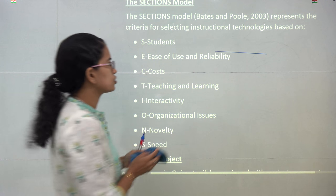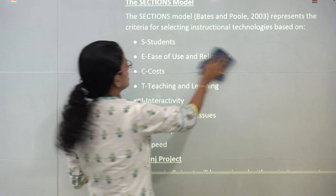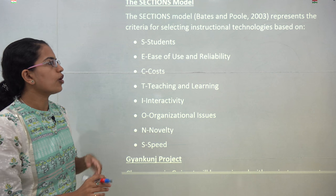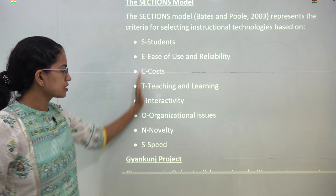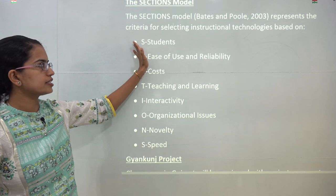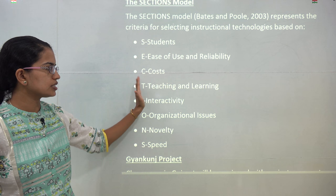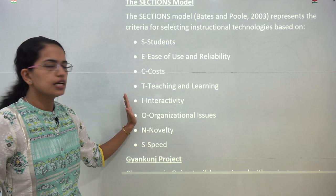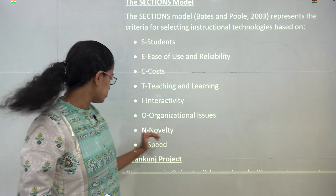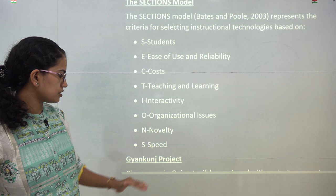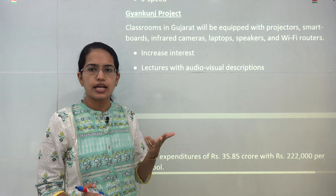The SECTIONS model was given by Bates and Pool in 2003 and represents the idea of selecting which instructional technology should be used. SECTIONS stands for: S — Students, E — Ease of use, C — Cost, T — Teaching, I — Level of Interaction, O — Organizational issues, N — Novelty, and S — Speed.